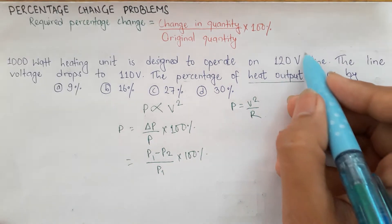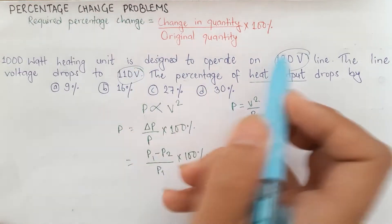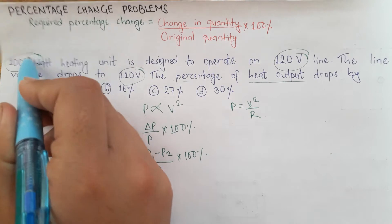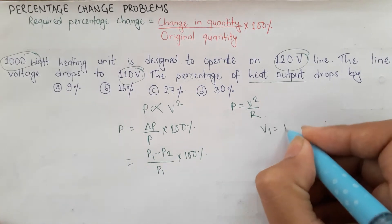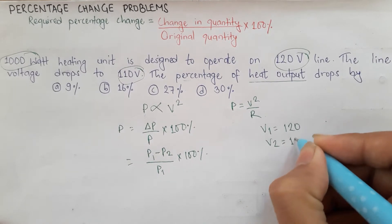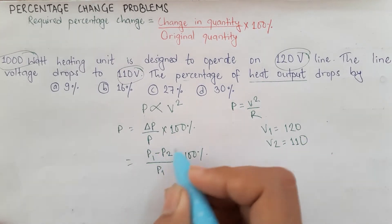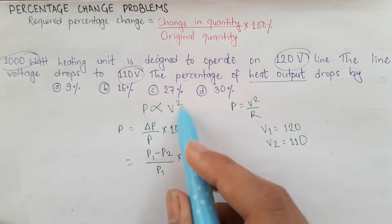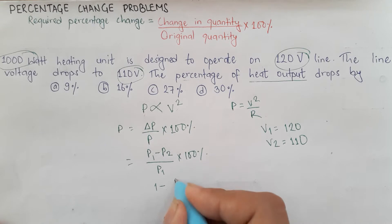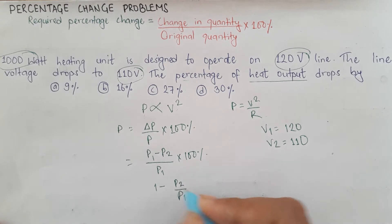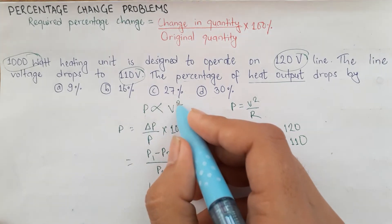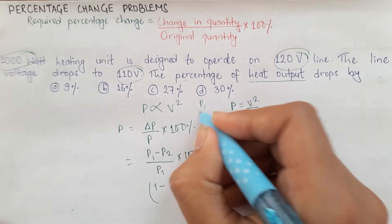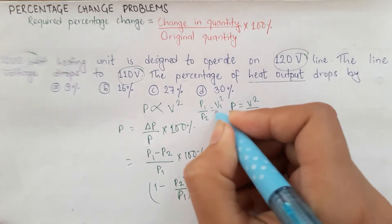We have two voltages: 110 volts and 120 volts, and one power value of 1000 watts. So V1 = 120 and V2 = 110. We now convert power to voltage using P ∝ V². Therefore, P1/P2 = V1²/V2², which allows us to write the expression as 1 minus P2/P1, into 100%.